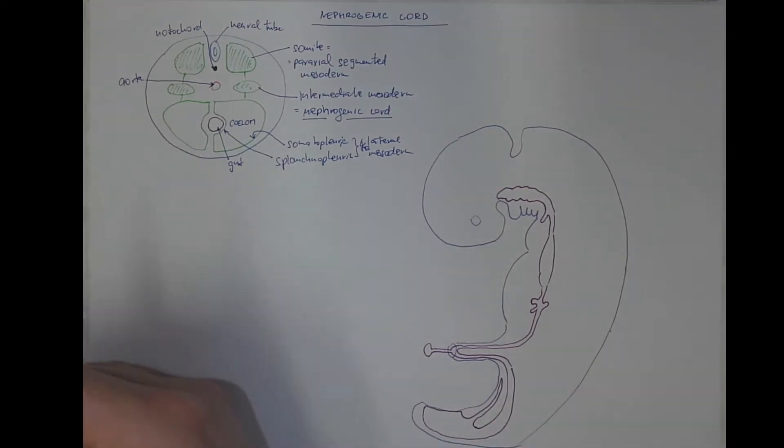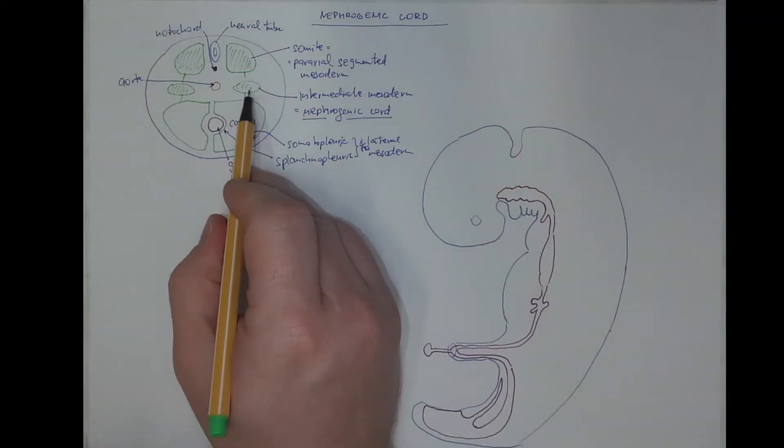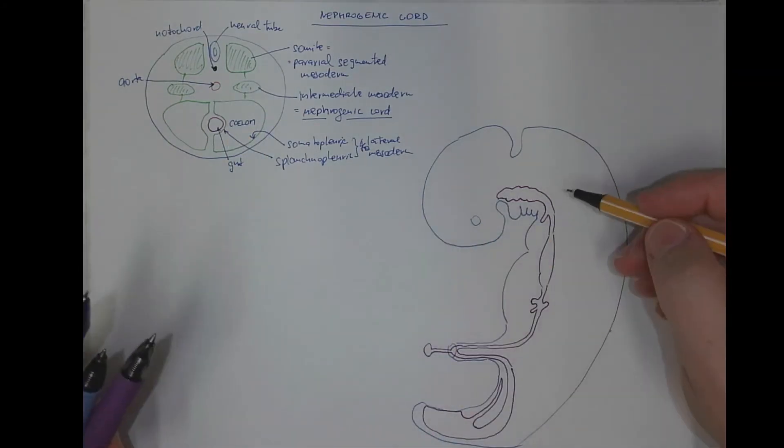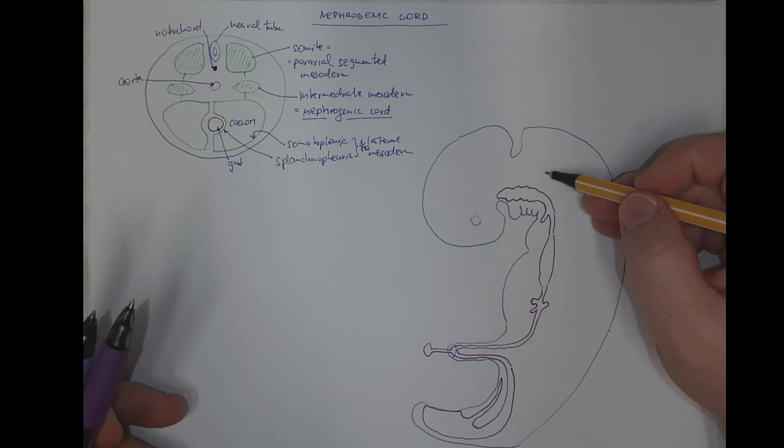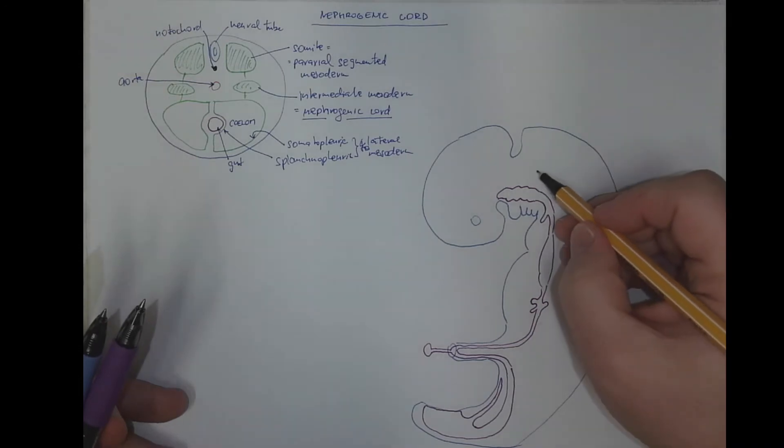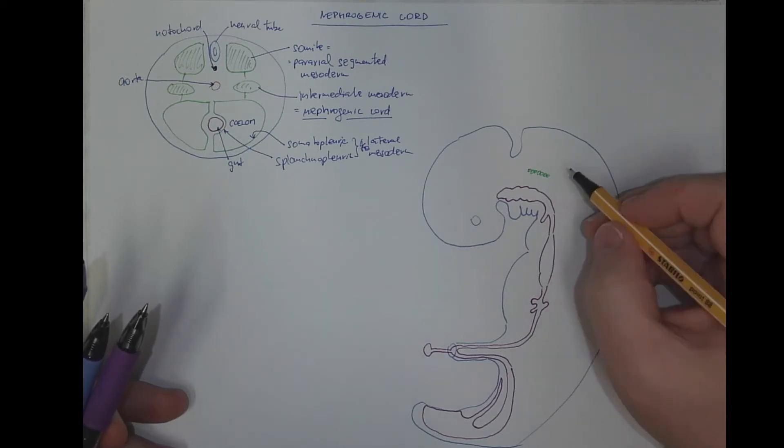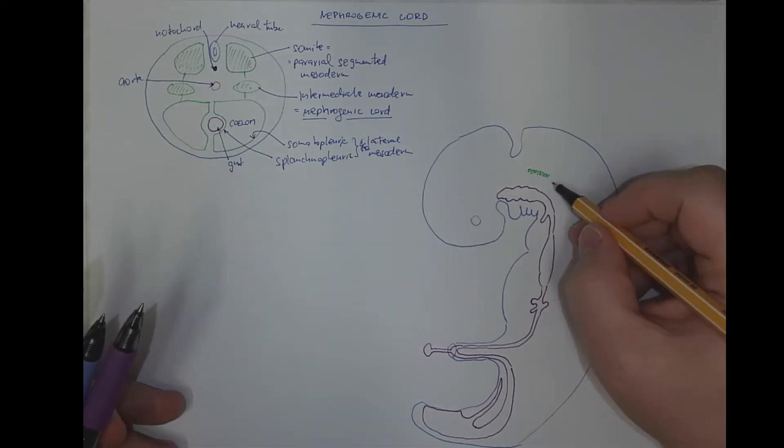Then this nephrogenic cord is a mass of material that could be tracked from the cervical region. That's where it produces a small rudimentary and temporary existing organ called pronephros.